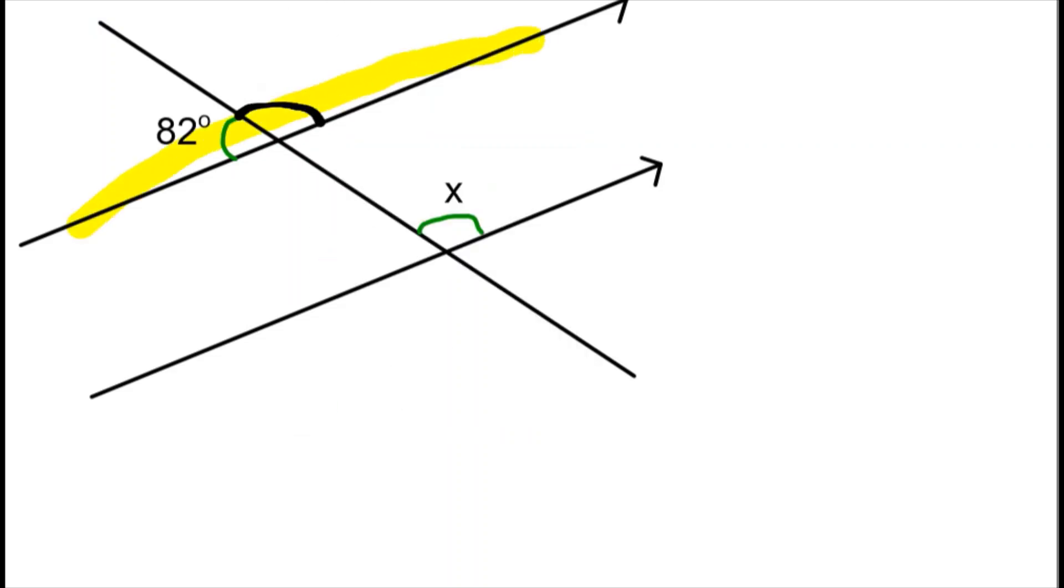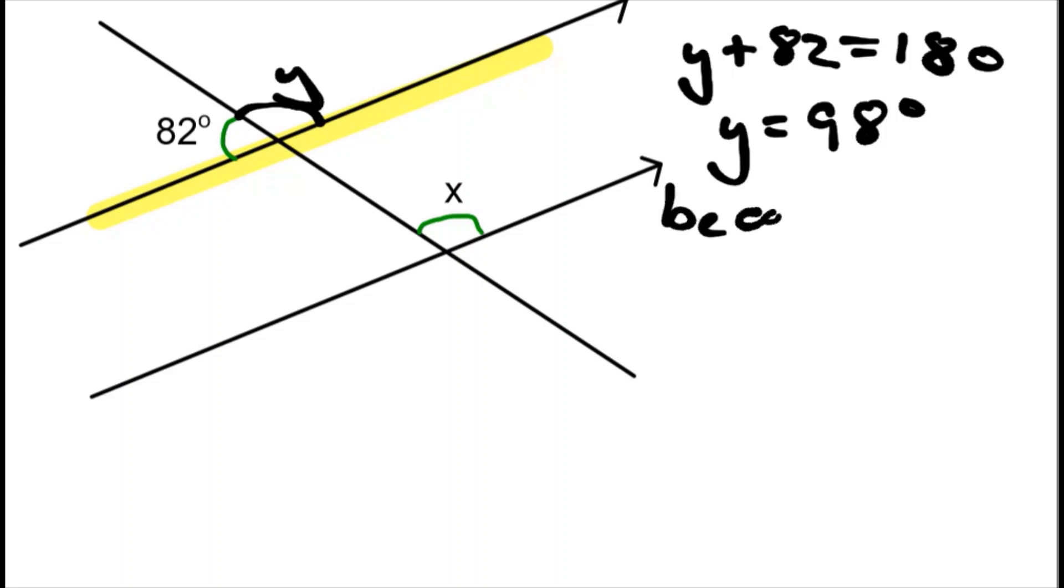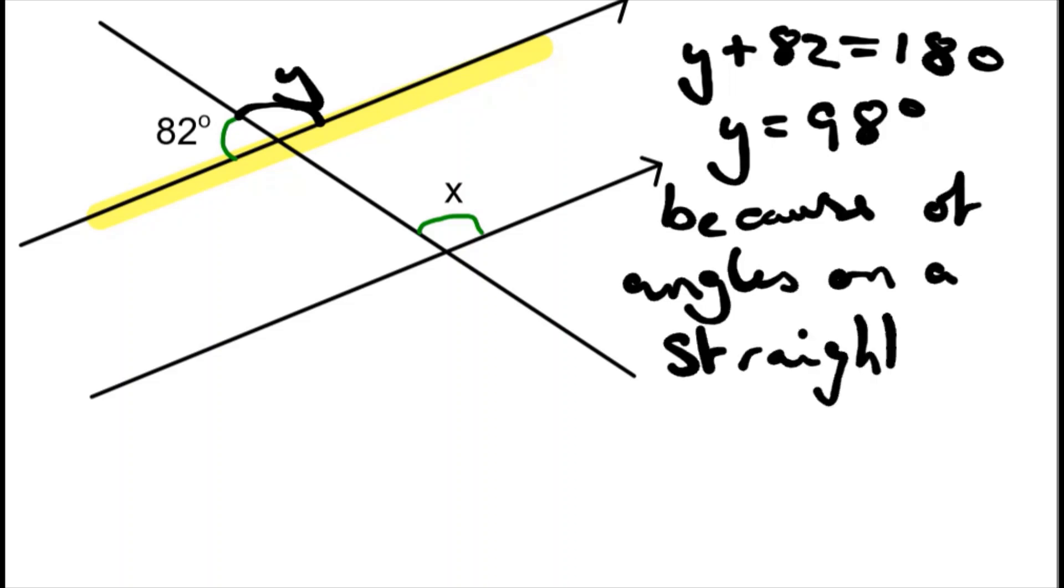If we can see this is a straight line, angles on a straight line add up to equal 180. So let's call this angle Y. So Y plus 82 equals 180. By solving this, we can say Y equals 98 degrees. And we need to state our reasons, so because of angles on a straight line.